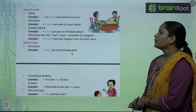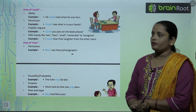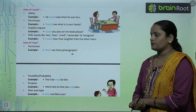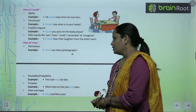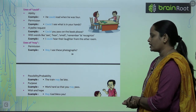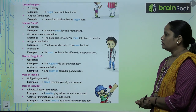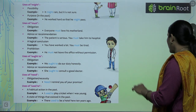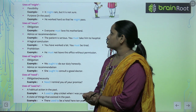Now what are the uses of may? May is used for permission — May I see these photographs? It is also used for possibility or probability — The train may be late. Purpose के लिए use किया जाता है — Work hard so that you may pass. Wish और hope के लिए — May God bless you. Now use of might: might is used for possibility — It might rain but it is not sure. Might is used for purpose in the past — He worked hard so that he might pass.